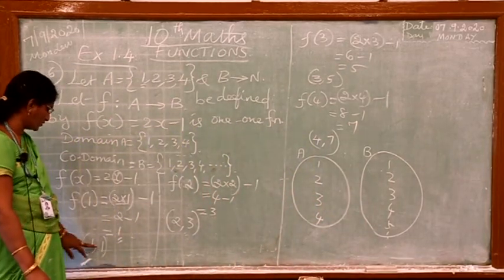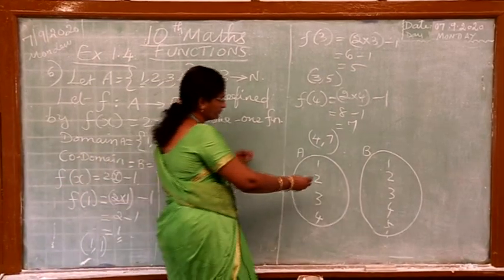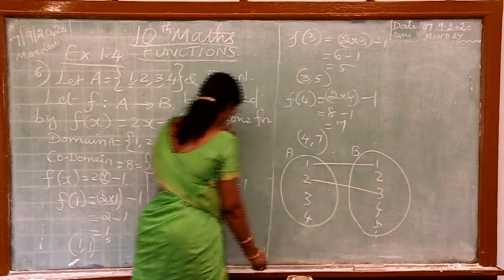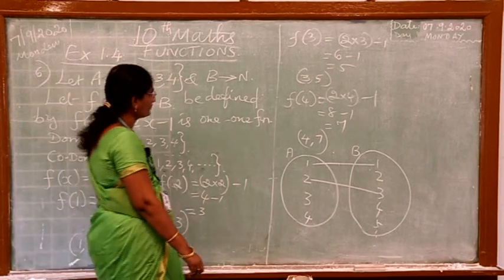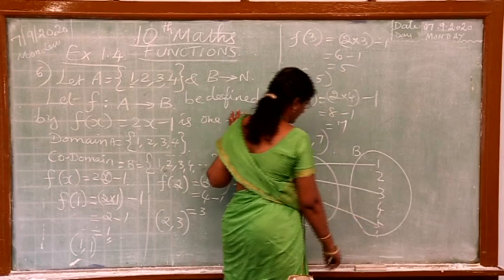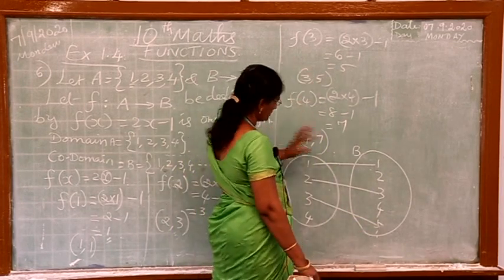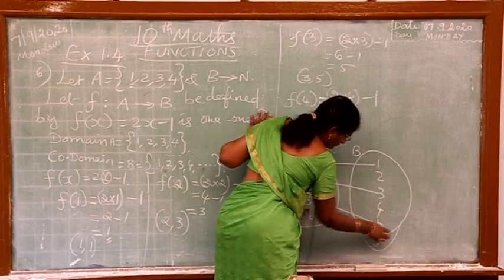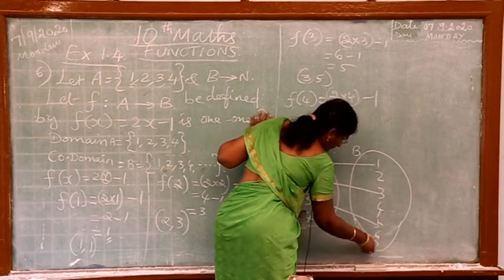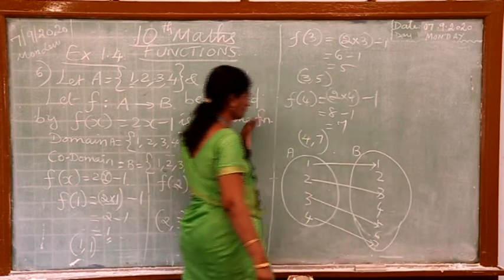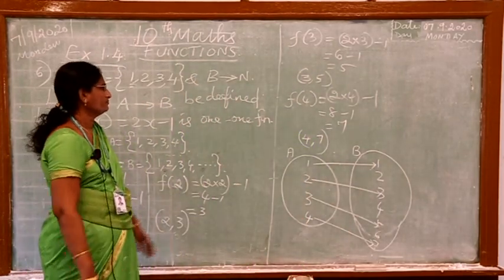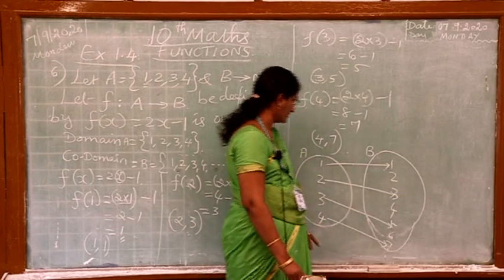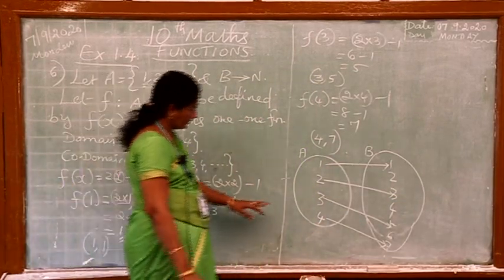Now 1 comma 1, so 1 to 1. 2 comma 3, so 2 to 3. 3 comma 5, so 3 to 5. 4 comma 7, so 4 to 7. Do you understand? See, this is domain, this is co-domain. What we have found out, we can mark like this.